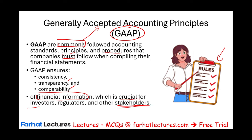Why do we need to be consistent? Why do we need to have the information comparable? Think of an audit. When a company hires an auditor, if the information is consistent and comparable from year to year or from company to company, the auditor will have a set of rules to follow. We'll talk about the importance of audit when it comes to GAAP shortly.